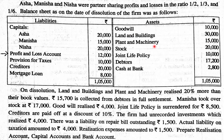The asset values to be transferred to the realization account are: Goodwill 10,000; Land and Building 30,000; Plant and Machinery 15,000; Stock 20,000; Joint Life Policy 10,000; Debtors 17,200. Cash need not be realized, so it is not transferred to the realization account. When these asset accounts are closed, the realization account is debited.